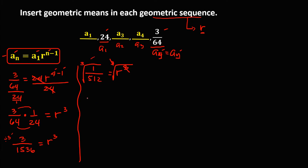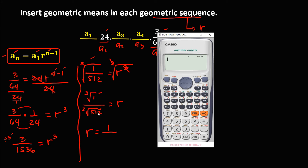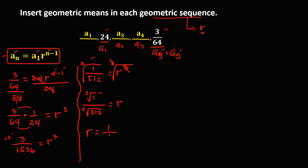We can write this as the cube root of 1 over the cube root of 512, which equals R. The cube root of 1 is 1, and the cube root of 512 — using a calculator — equals 8. So therefore the common ratio R is equal to 1 over 8.